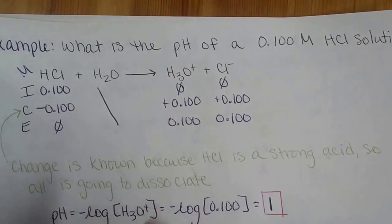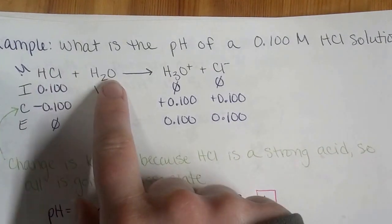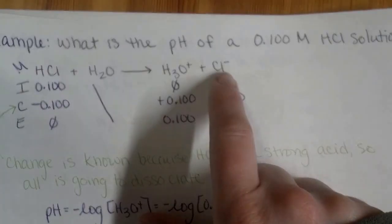So we set up an ICE table. We have HCl interacting with water to form H3O+ and Cl-.